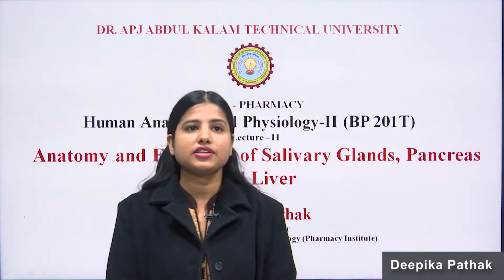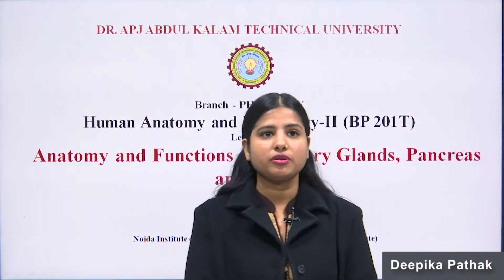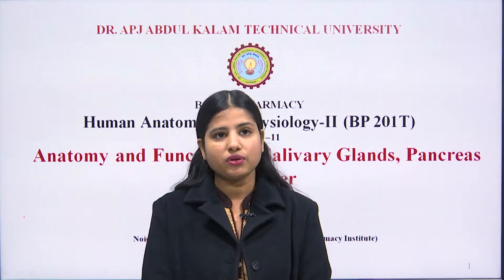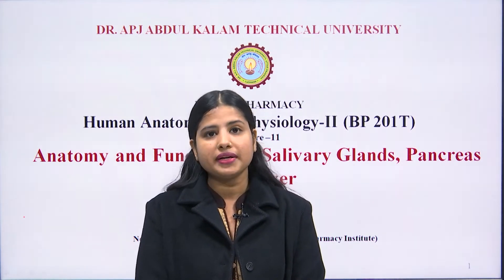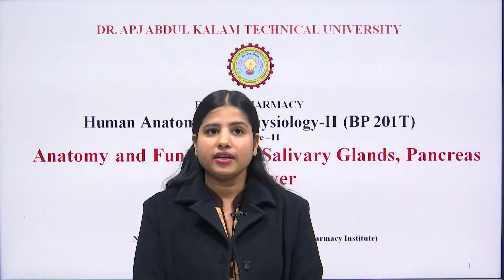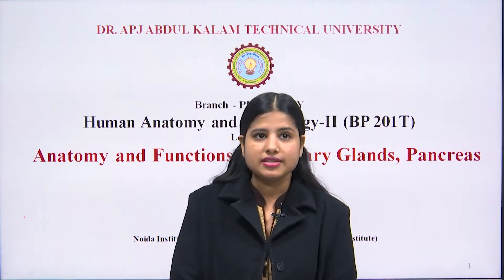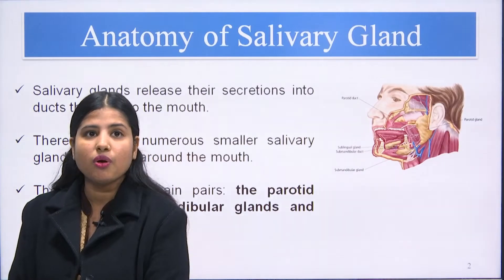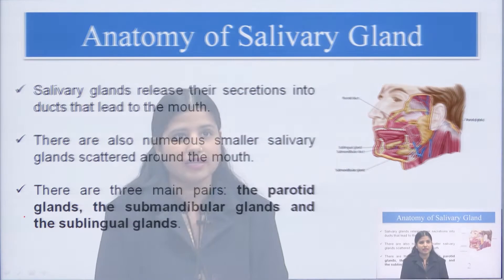Hello everyone. In this lecture I am going to discuss about the anatomy and functions of accessory organs. The accessory organs are salivary glands, pancreas, and liver. These are part of the digestive system, working as accessory organs. In the previous lecture, we already discussed the anatomy of the GIT, stomach, small intestine, and large intestine. Let us start the discussion on the anatomy and function of the first accessory organ, which is the salivary glands.